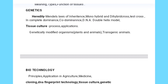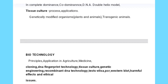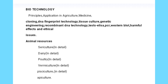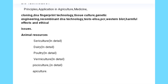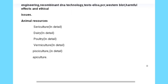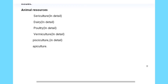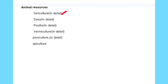From tissue culture: process and applications, genetically modified organisms — both plants and animals — and transgenic animals. From biotechnology: principles and applications in agriculture and medicine, cloning, DNA fingerprinting technology, tissue culture, genetic engineering, and recombinant DNA technology. From animal resources: sericulture, dairy, poultry, vermiculture, pisciculture, and apiculture — all in detail.